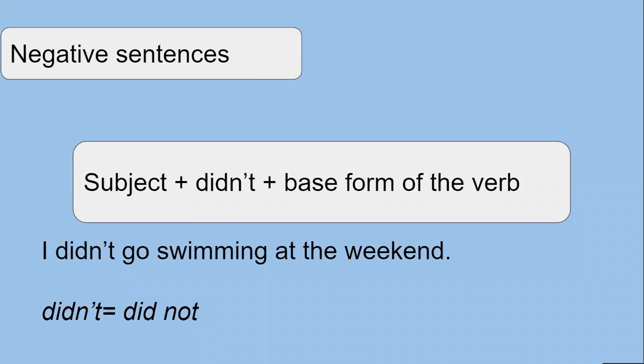In the negative sentence, we use didn't after the subject and the base form of the verb. Didn't is the short form of did not. For example, I didn't go swimming at the weekend.